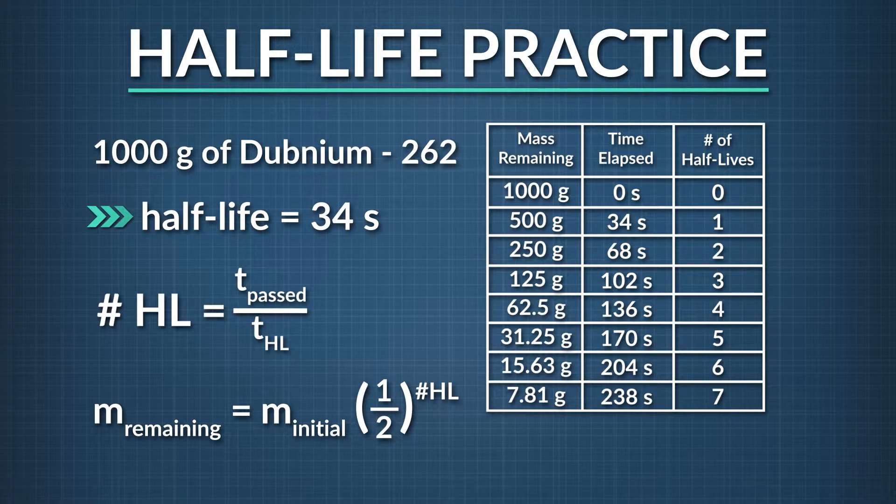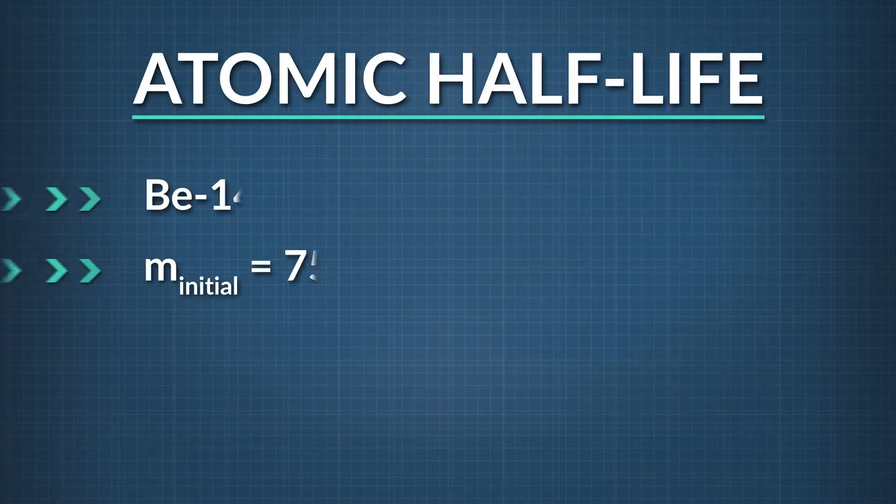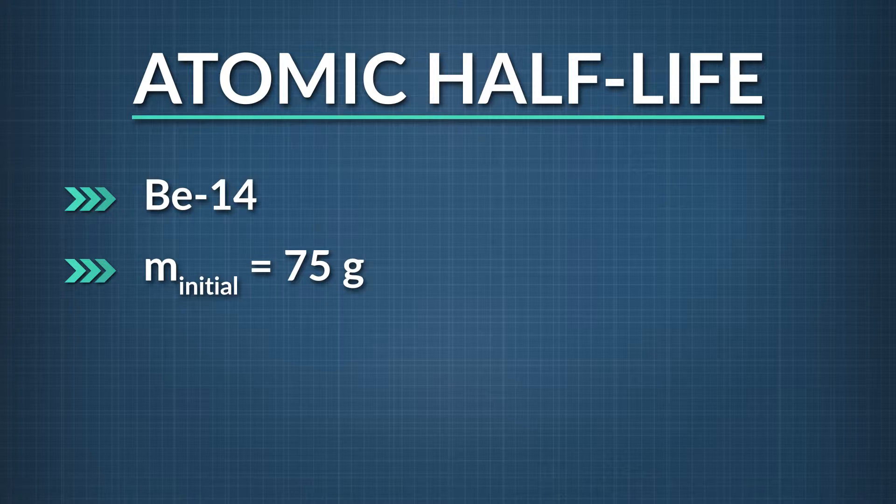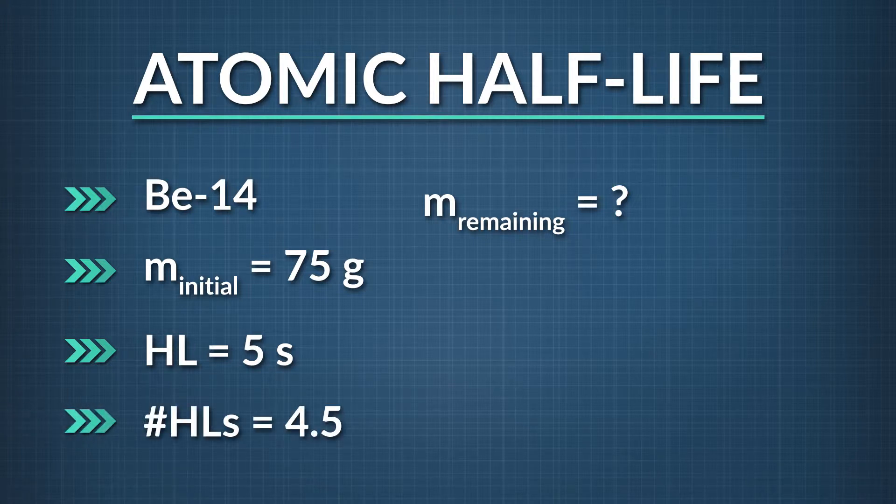You have 75 grams of beryllium-14, a radioactive isotope with a half-life of 5 seconds. How many grams of beryllium-14 remain after 4.5 half-lives have elapsed?